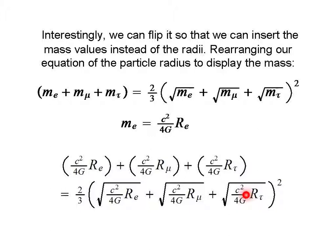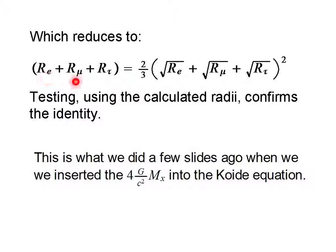Which reduces to the sum of the radius of the electron, muon, and tau particle equaling this term over here. And testing using the calculated radii confirms the identity. And this is what we did a few slides ago when we inserted this term here, which is the radius, into the Koide equation.